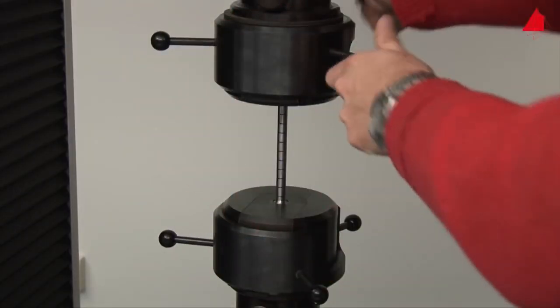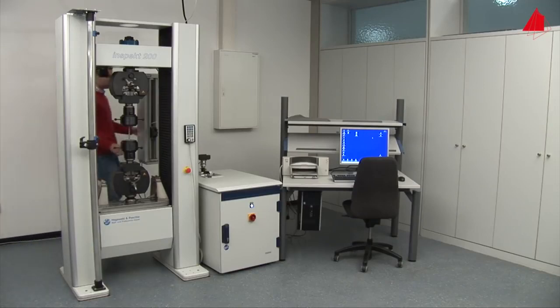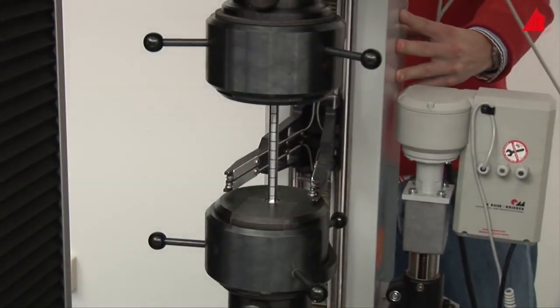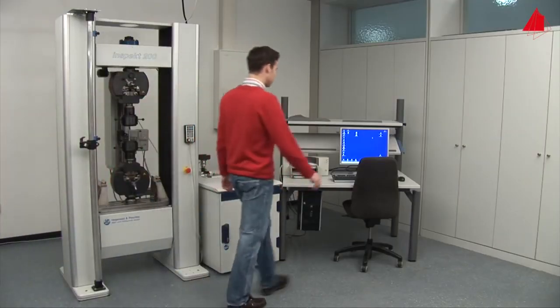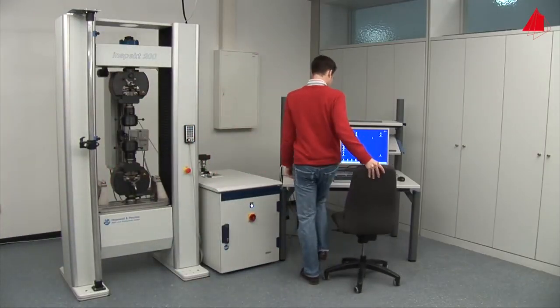In the next step, he swings the extensometer into its working position and checks that everything is correctly prepared. Then he selects all necessary testing parameters on the control computer.